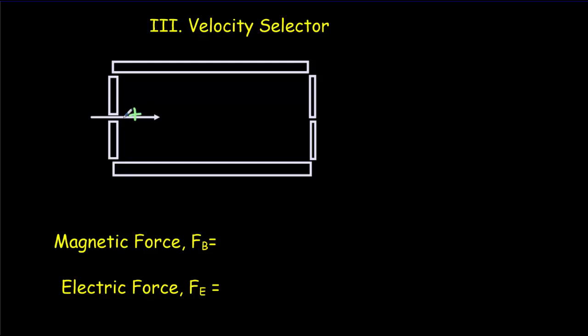As our positive ion passes through that hole it enters region 3, the velocity selector. In the velocity selector there's a positively charged plate and a negatively charged plate, and that exerts an electric force on our positive ion. That force is going to be downwards in this case.